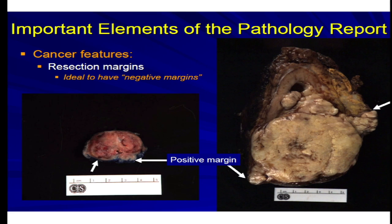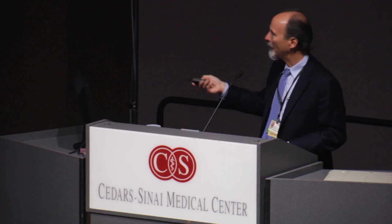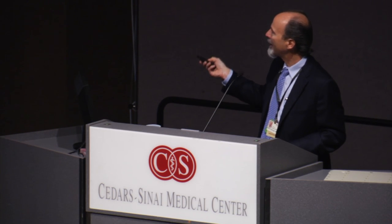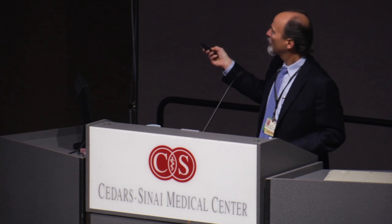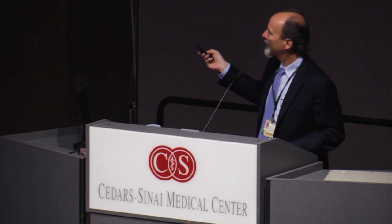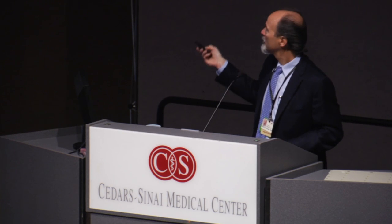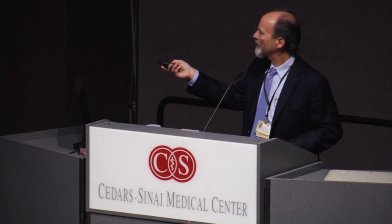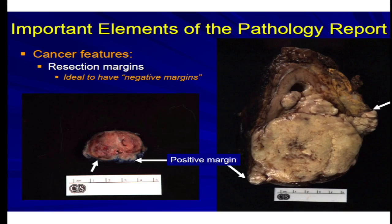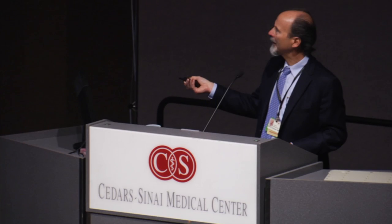Resection margins are related to local aggressiveness of a tumor. It's ideal that when a partial or complete nephrectomy is performed, the surgeon achieves negative margins — that's optimal. Sometimes it's not possible, especially with a high-stage renal cell carcinoma extending into fat. A positive margin might indicate the need for additional therapy. With a smaller resection, sometimes the surgeon needs to take a cleaner margin analyzed via frozen section to try and clear that margin.